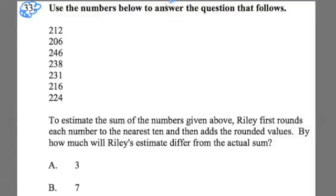It says use the numbers below to answer the question that follows. We have a whole bunch of numbers and it says to estimate the sum of the numbers given above. Riley first rounded each number to the nearest ten and then added the rounded values. But how much will Riley's estimate differ from the actual sum?